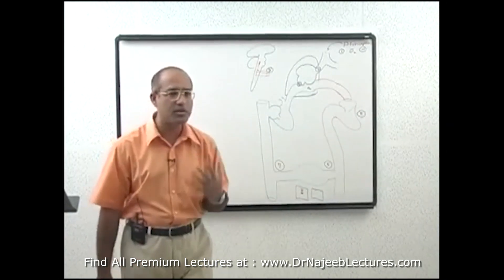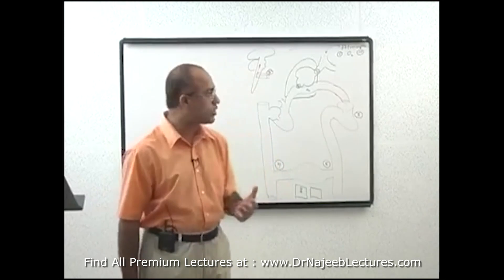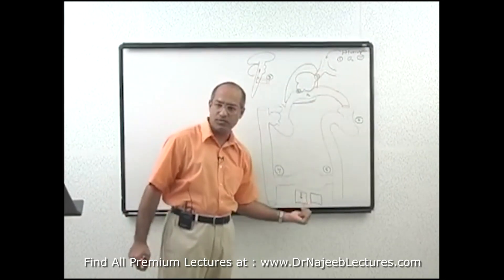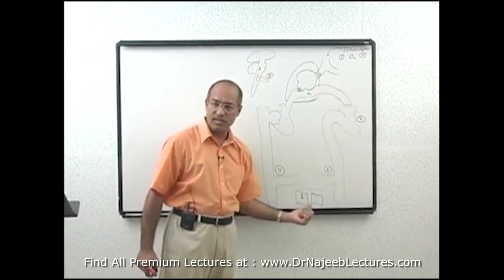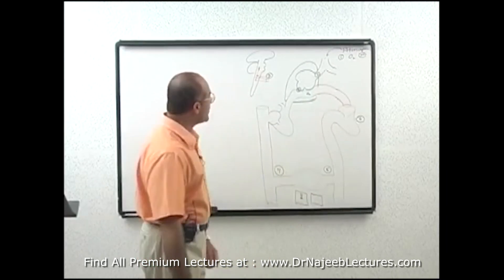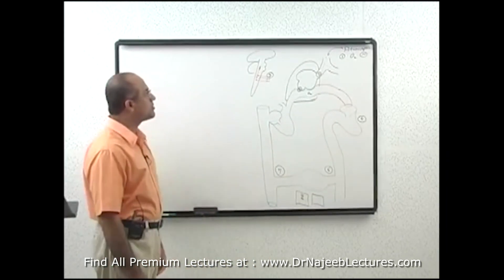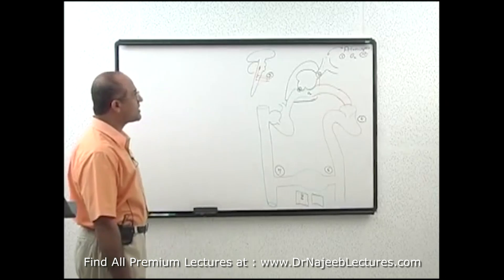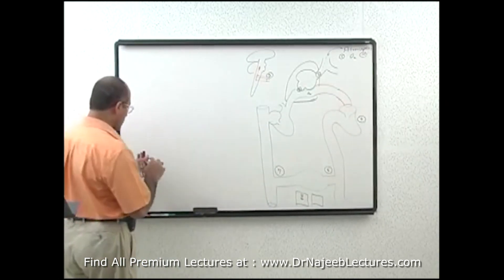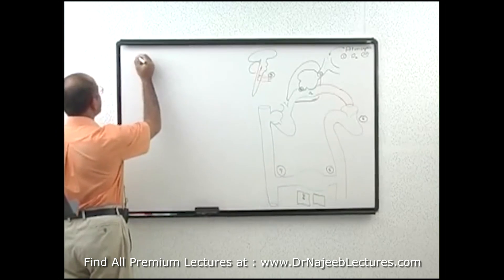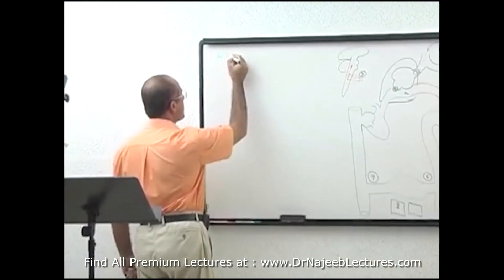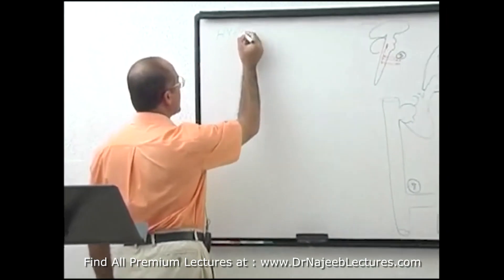So the concept is clear: whenever you think of hypoxia, you have to think of this diagram from top to bottom — the problem may be anywhere. Now we classify hypoxia in the classical fashion as defined in most textbooks. There are four types of hypoxia.